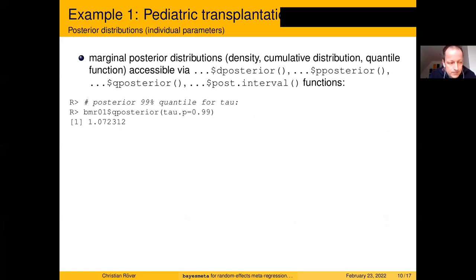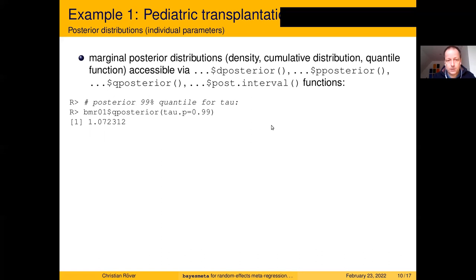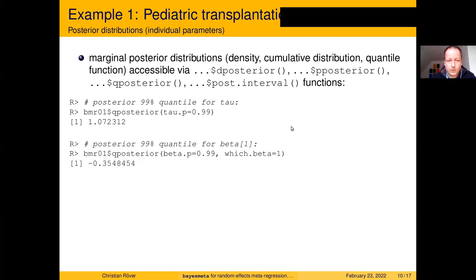From the bmr function's output object bmr01 we can access more detailed information on parameters and shrinkage estimates. A number of functions are included: for posterior densities, posterior cumulative distribution functions, and quantile functions, we use d_posterior, p_posterior, and q_posterior — named similarly to other probability distributions in R. For example, we can look at the 99th quantile of the tau parameter, or quantiles of the beta parameters by specifying which one we want.